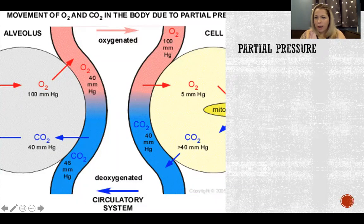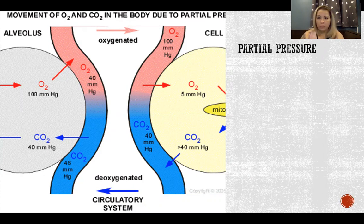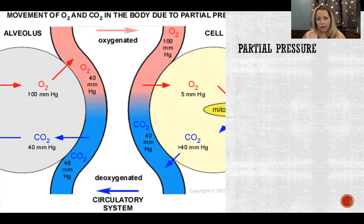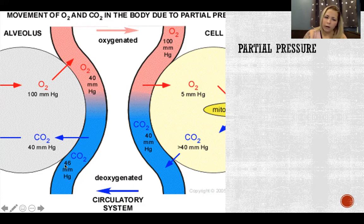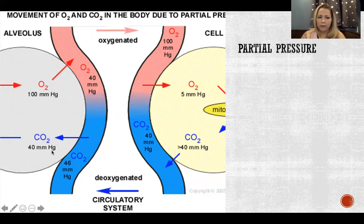So how does that actually happen? That's where we get to partial pressure. In this image — I like this one because it shows the whole process in one picture — on the left side, the big circle is one alveolus, and on the right side, the big circle is a cell. We can see the blood carrying deoxygenated blood to the alveolus, and the concentration of carbon dioxide in that deoxygenated blood is greater than the concentration of carbon dioxide in the air inside the alveolus. That difference is the partial pressure.